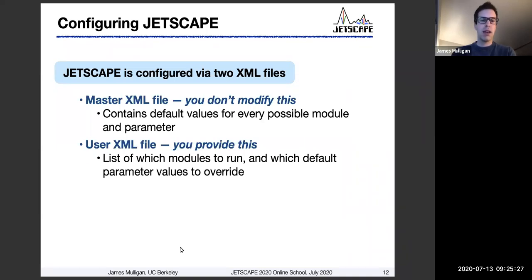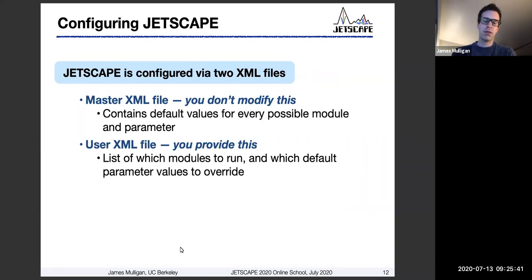The main thing you actually interact with when running Jetscape is what we call the user XML file. This is a much shorter, much simpler file which specifies a list of which modules in Jetscape you want to run, as well as which parameter values you want to use if they differ from the defaults. By default, all parameters are inherited from the master XML file, but any specific parameters different from those defaults are provided in your user file.